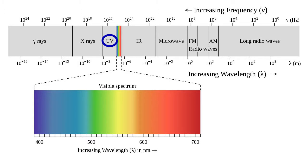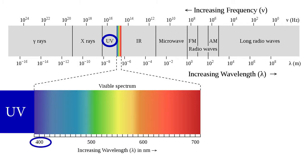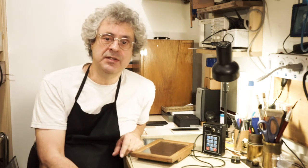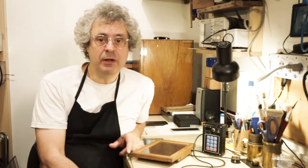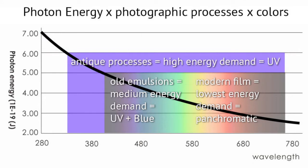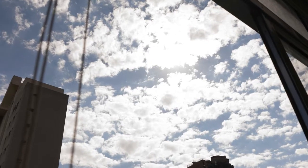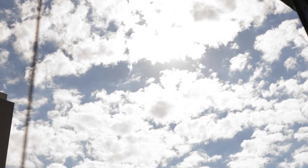UV light goes up to 400 nanometers in wavelength — beyond that it's already the blue part of the visible spectrum. The reason why these printing processes need UV is that a photon in the UV part of the spectrum carries more energy than the ones corresponding to the visible part. But there is one UV light source that is powerful, very rich in terms of wavelengths, and it's free — and you know I'm talking about the sun.